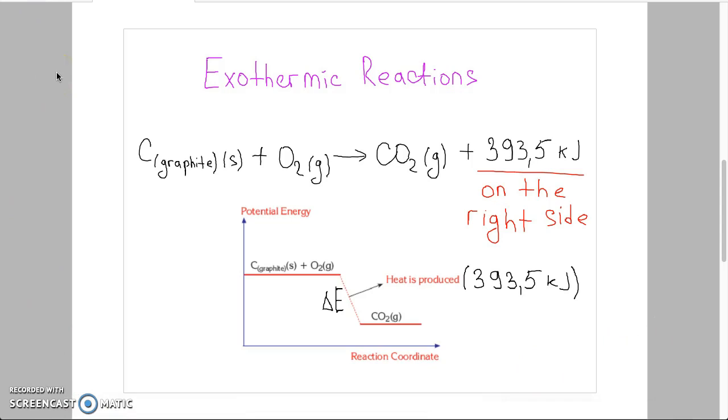Exothermic reaction. In this type of chemical reaction, energy is produced as heat and is noted on the product side, on the right side. Total potential energy of products is smaller than total potential energy of reactants. The difference between these potential energies, delta E, for example, produces thermal energy or heat is produced. Energy is released.